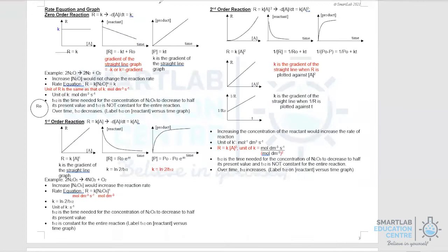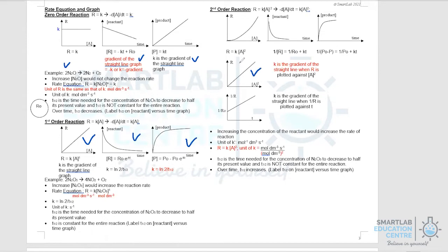We'll now take a look at the various graphs you need for A-level. In total, you need to know zero-order, first-order, and second-order reactions, and there are seven graphs that you need to know. These are the seven graphs commonly asked at A-level or in the exam.